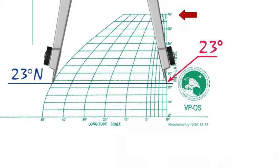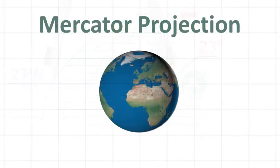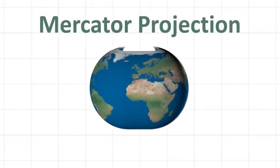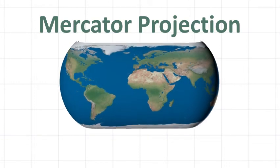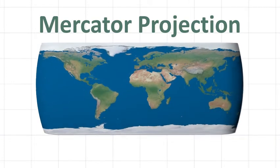Note, latitudes on the longitude scale stop at 70 degrees. The Mercator chart projection is not suitable for use in high latitudes due to significant stretching of the polar regions.